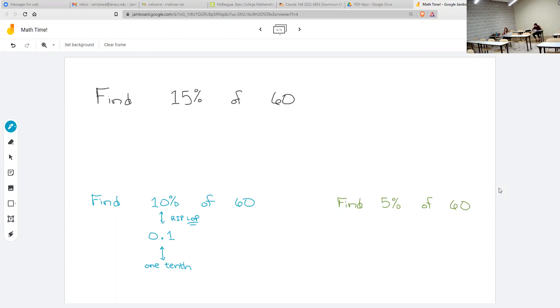Somebody just did this in their head and was a little surprised that they did. What is 15% of 60? The answer is 9.